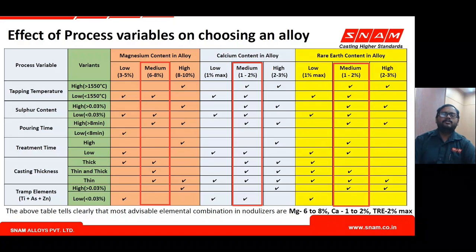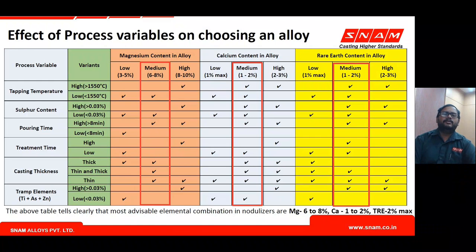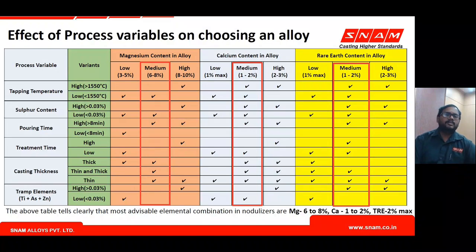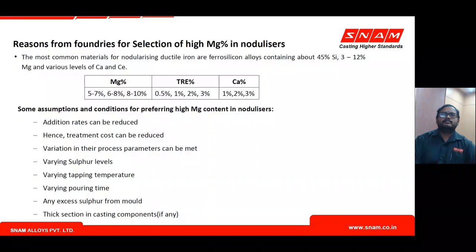It is not just the magnesium content that supports good ductile iron production — the other supplementary elements complement magnesium. It is not always necessary to keep increasing magnesium; supplementary elements can be increased to compensate, retaining 6–8% magnesium and getting maximum benefit. The supplementary elements can compensate for process variations without increasing magnesium from 6–8% to 8–10%.